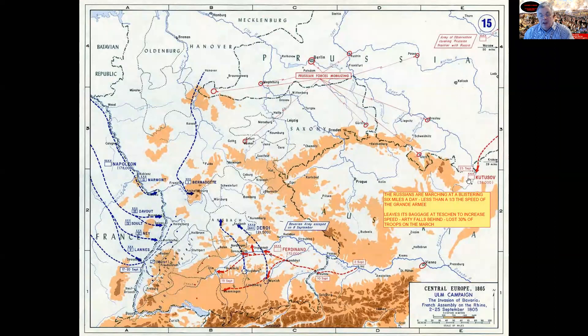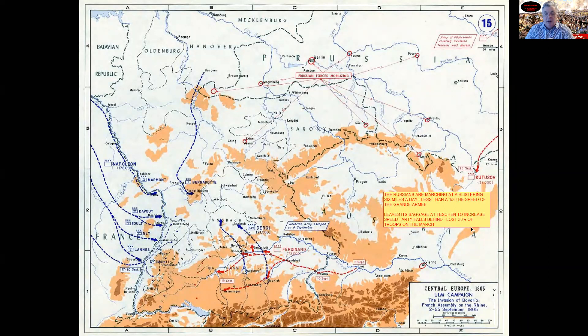There are two more Russian armies behind Kutuzov. They're marching at the blistering speed of six miles a day, carrying their logistics and their trains with them. To go faster, he says he's going to leave the baggage, and they eventually get up to a respectable 12 miles a day. But he's already lost 30% of his troops on the march, and he's going to lose a lot more as he approaches Vienna.